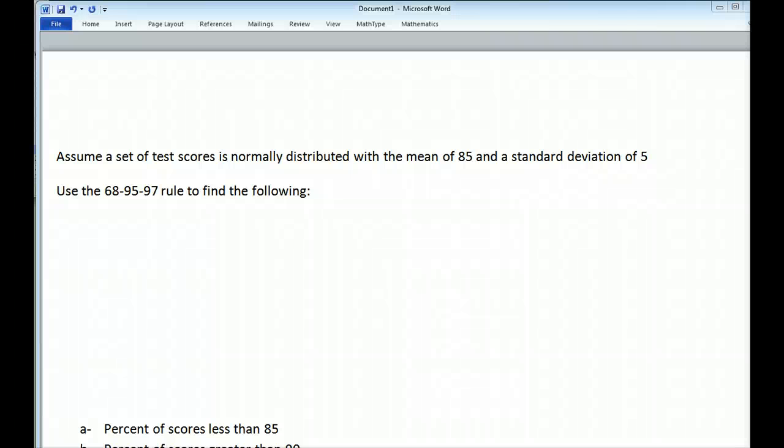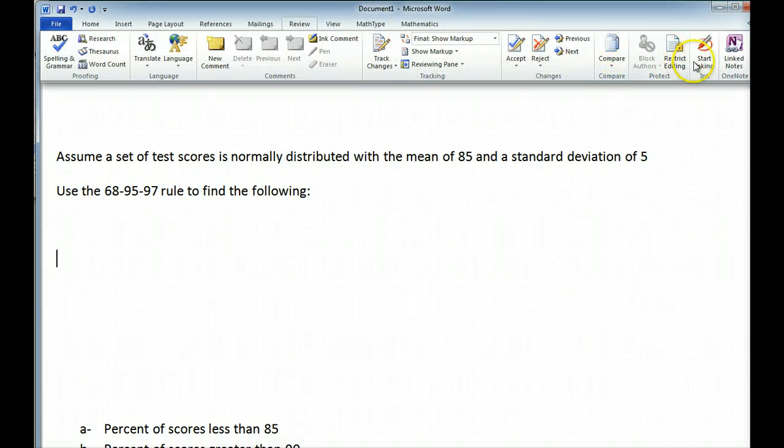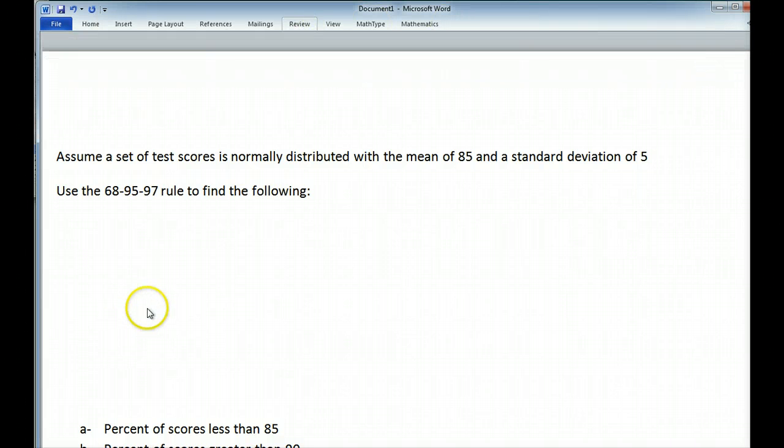Let's take a look at the 68-95-97 rule. Now what this rule is saying is that when we draw out a curve of data, 68% of the data will fall within one standard deviation, 95% within two standard deviations, and 97% within three standard deviations.